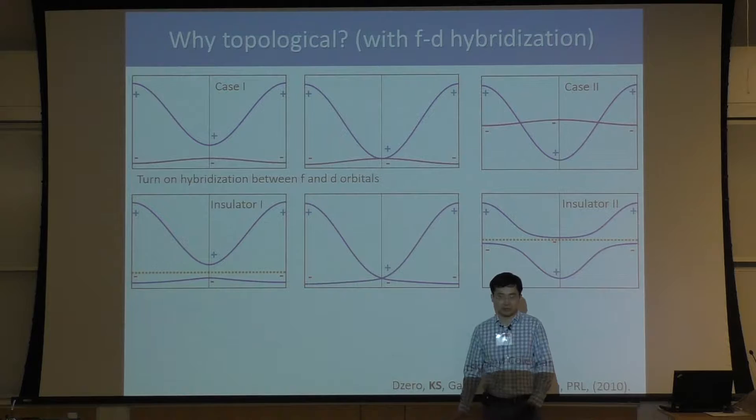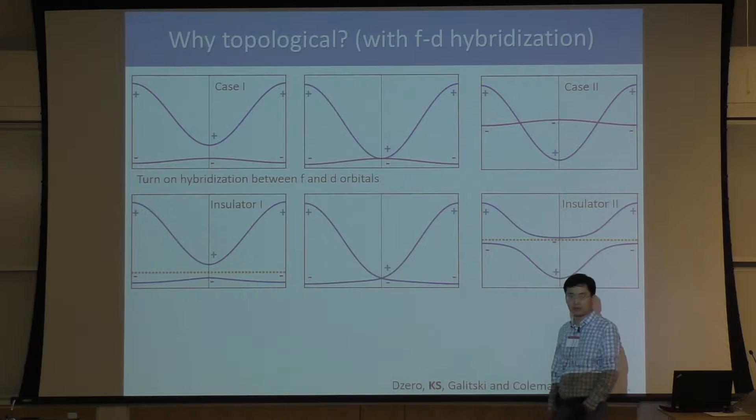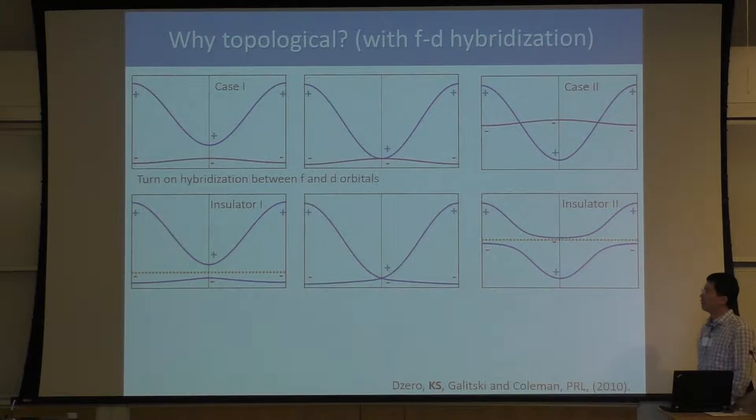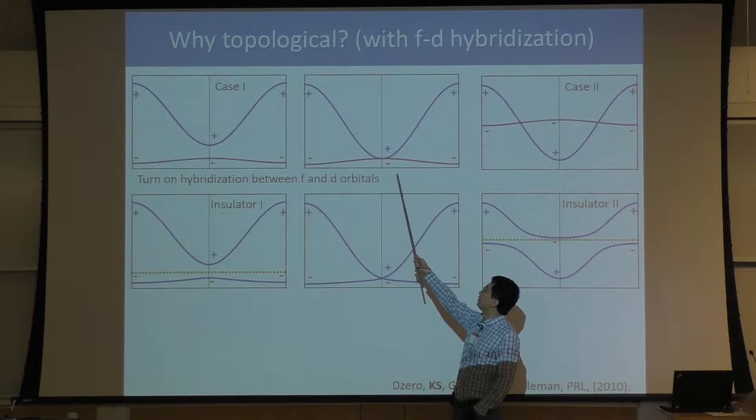Insulator 1 and insulator 2 are both heavy fermion insulators. For many, many years, people believed there is only one heavy fermion insulator — that these two states are the same quantum phase, adiabatically connected. But that's actually not correct. There are actually two different types of heavy fermion insulators. To realize that, we just need to look at the marginal case.